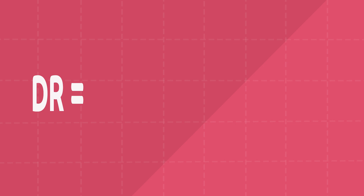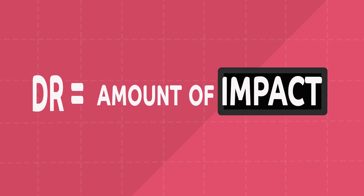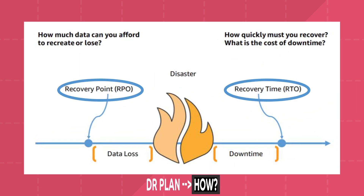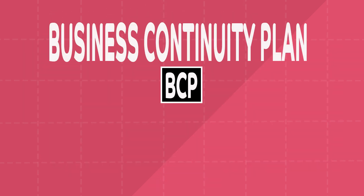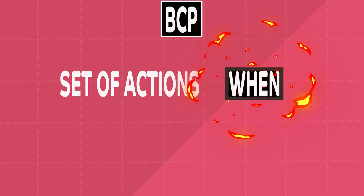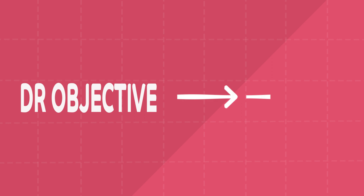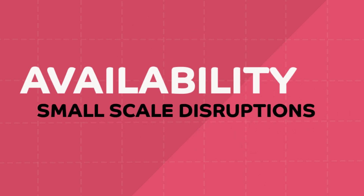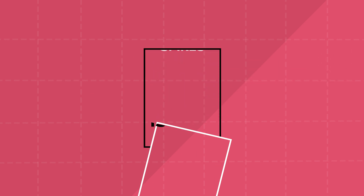Disaster recovery is the amount of impact a business can take during a disaster, which is often defined in terms of RPO and RTO. A DR plan outlines how you intend to bring your company back to business as usual. You also need a business continuity plan, or BCP, which is essentially a set of actions a company puts into motion when disaster strikes. The primary objective of DR is business continuity. It focuses on disaster events, whereas availability focuses on more common disruptions of smaller scale, such as component failures, network issues, and load spikes.